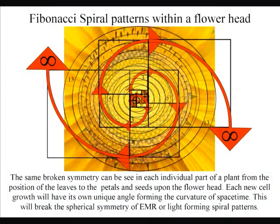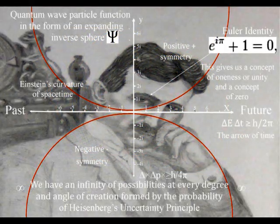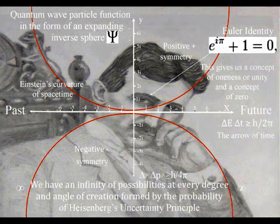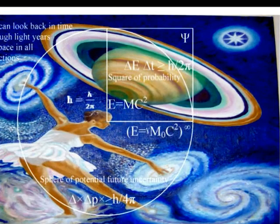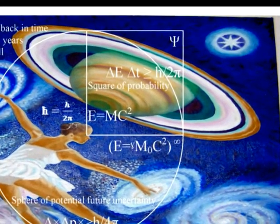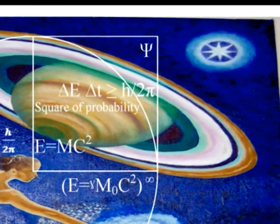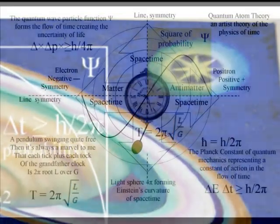Tesla was critical of Einstein's relativity, and he said that space cannot be curved, for the simple reason that it can have no properties. But in this theory gravity is a secondary force, and the curvature of spacetime is formed by the rate that time flows. Objects just freefall towards the greatest energy or mass, because it has the slowest rate that time flows, or the greatest time dilation.